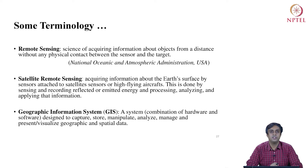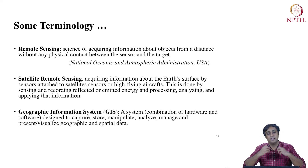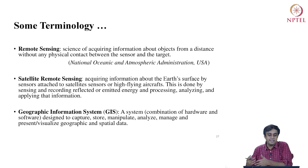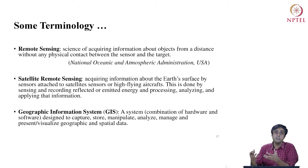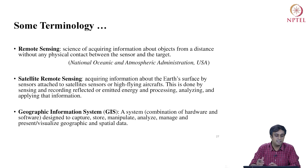The first important terminology for geostatistical data is remote sensing. Remote sensing is the science of acquiring information about objects from a distance, without any physical contact between the sensor and the target — the object of study. Satellite remote sensing specifically means acquiring information about the earth's surface using sensors attached to satellites or high-flying aircraft, by sensing and recording reflected or emitted energy, then processing, analyzing, and applying that information.